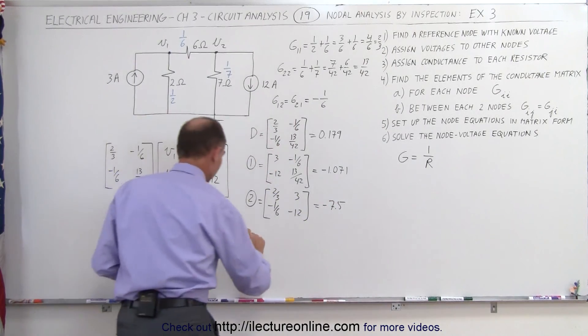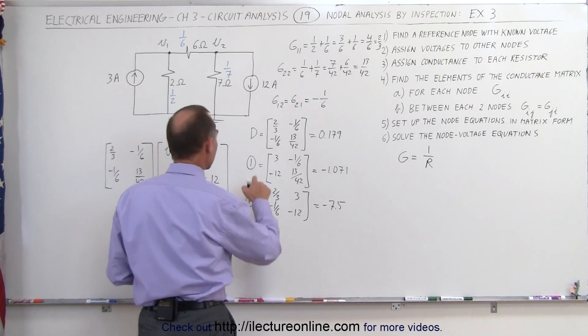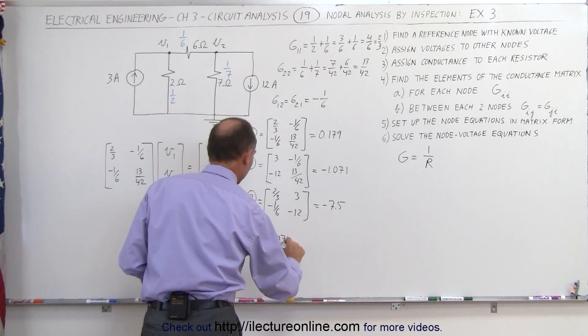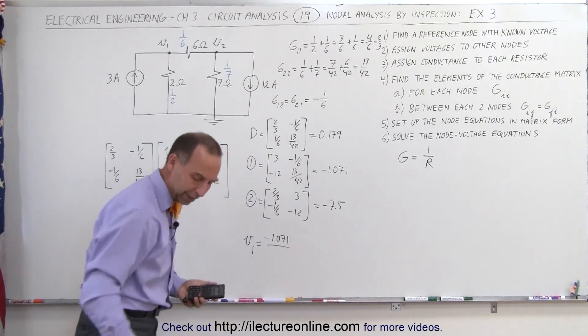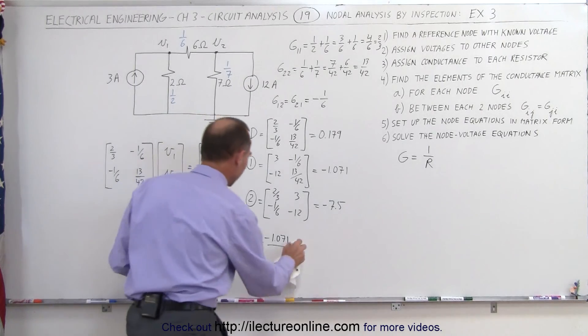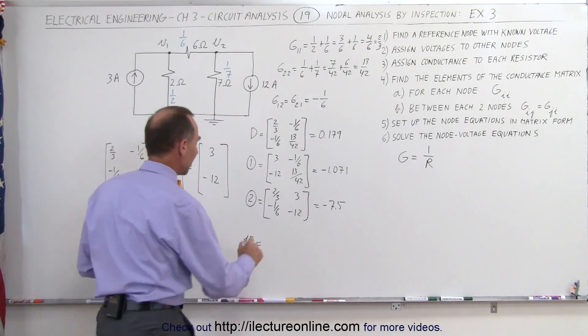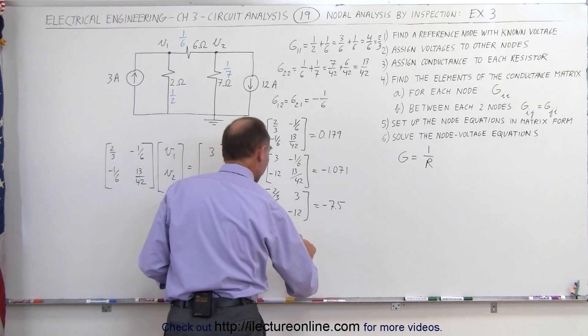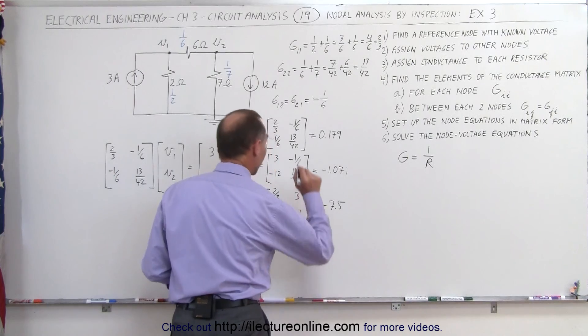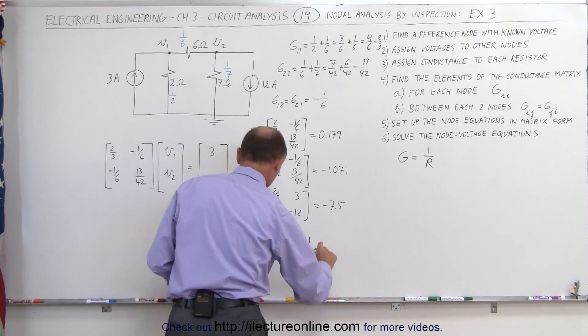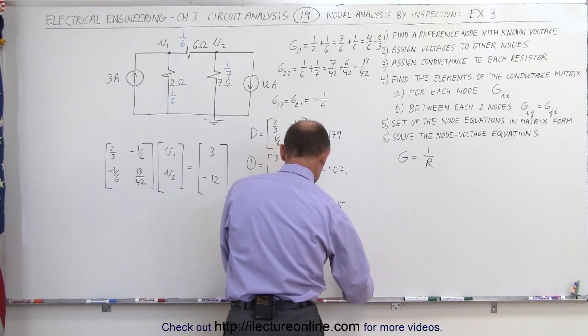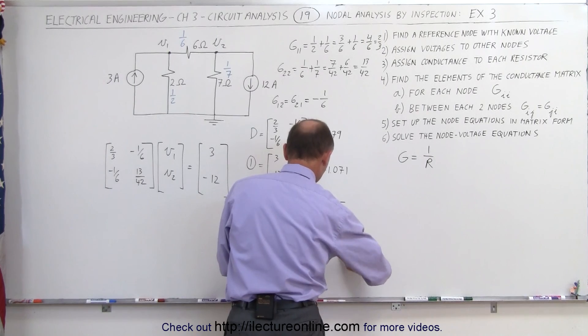Now we're ready to find V1. V1 is equal to the quotient of the first matrix here, that's minus 1.071 divided by the determinant, or I might as well write it out, that way you can see where it came from, it's always better to see that. So V1 can be found by taking the first matrix, 1 divided by the determinant, in this case that's minus 1.071 divided by 0.179, and we get minus 5.98, that's about 6, let's just write as minus 6, minus 6 volts, close enough.